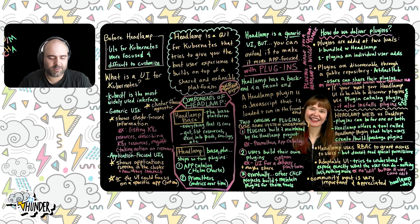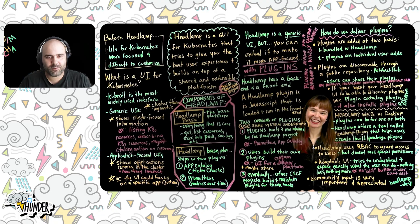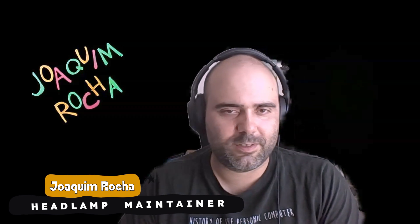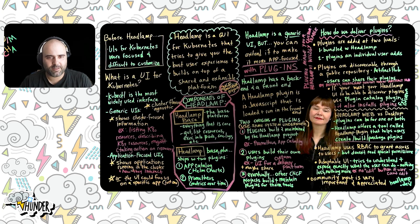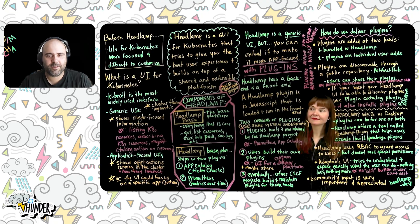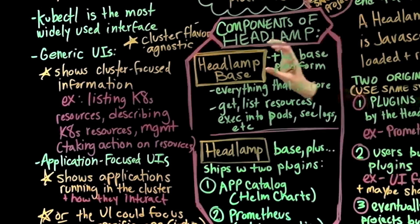We're talking about listing resources, seeing the details of one resource, maybe editing that resource. And when I say resource, these are workloads — like pods, deployments, stuff like that. All the things that are very specific to Kubernetes itself. So like cluster-level information.